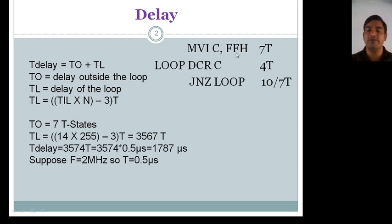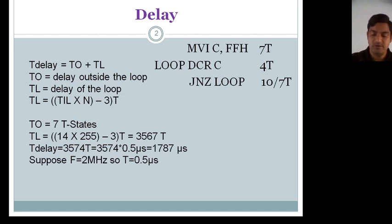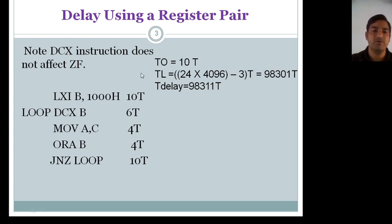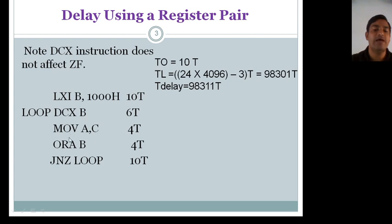We have taken maximum possible value FF, but we're only getting about 1.8 ms. If we want to increase the time delay further, instead of a single register we can use a register pair. However, one important thing to remember: in the case of DCX, it does not affect the zero flag. So when the register pair BC becomes 0000, the zero flag will not be set, and the loop will execute infinitely.